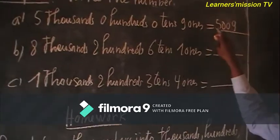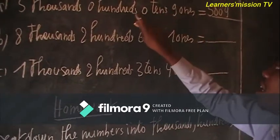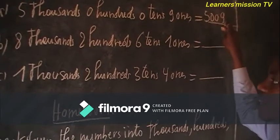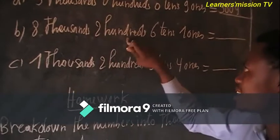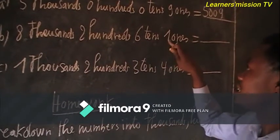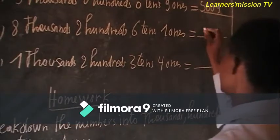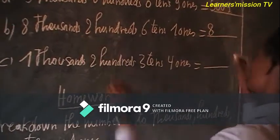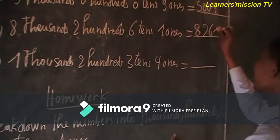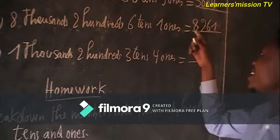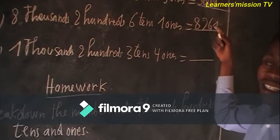It means that we are having five thousand, nine — five thousand nine. Then here, we are having eight thousand, two hundred, sixty ten, and one ones. The number is eight thousand, eight thousand, two hundred, sixty-one.